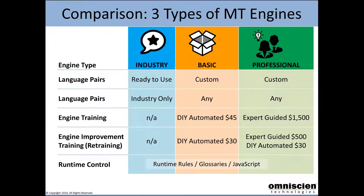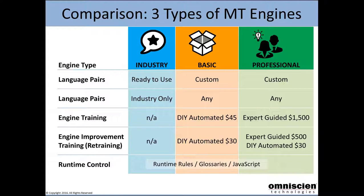Comparing the three engine types: industry is immediately available and you only pay for the translation you run through it. Depending on which type of engine, translation costs a little more for a professional than for an industry engine, but our translation is based on a subscription and you're paying fractions of cents per word — very competitive with anything else in the market. Pricing depends on the subscription level, but it starts as low as around $20 a month. To do a basic customisation is $45 US dollars, and to update that engine later with additional data — essentially retraining it — is another $30 each time.